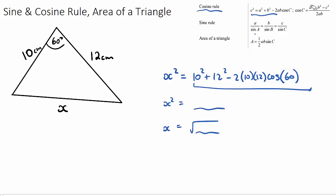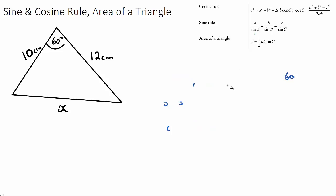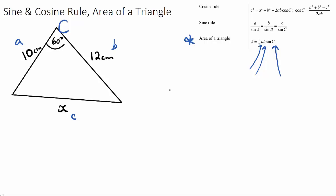Finally, the area of a triangle. The formula is: Area equals one half times a times b times sine C. This means if we have two side lengths a and b, and angle C — the angle between them — we can calculate the area. For our example, the area would be one half times 10 times 12 times sine of 60, and we simply type this into our calculator.